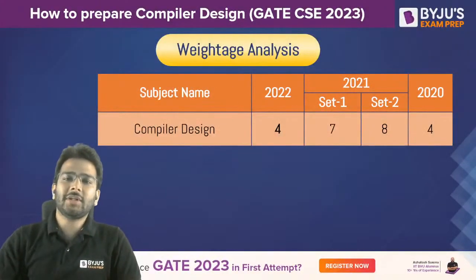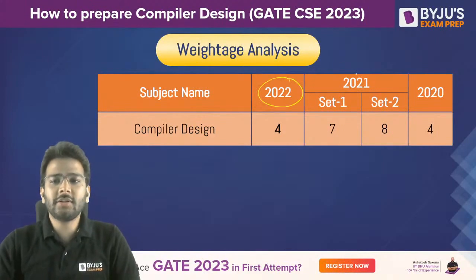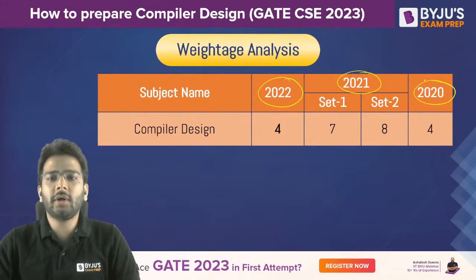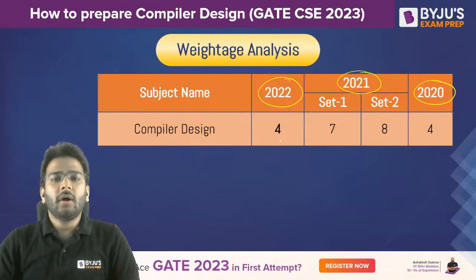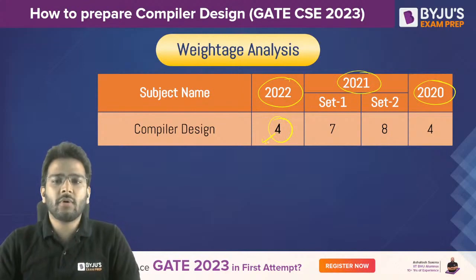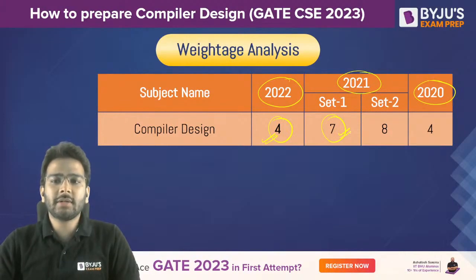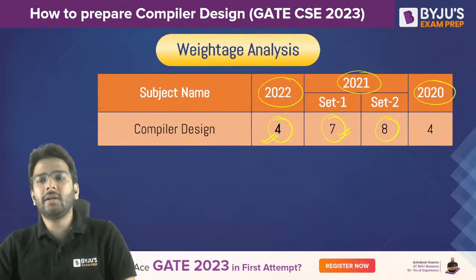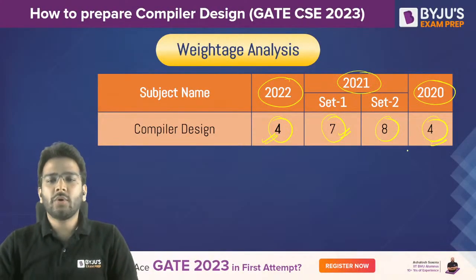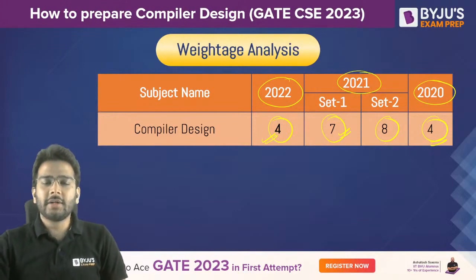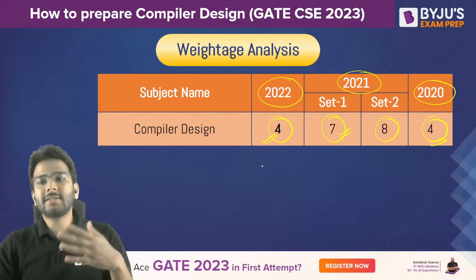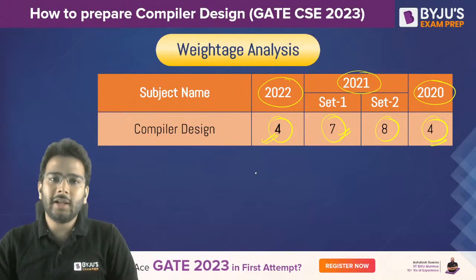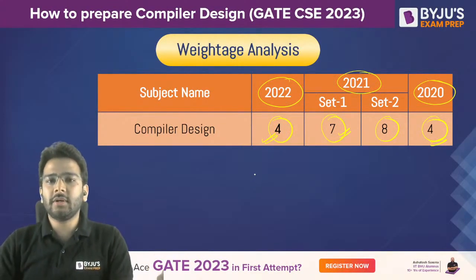If we talk about the weightage analysis, for the last three years — 2022, 2021, and 2020 — on average it is going to be four to eight marks. In 2022 they asked questions for around four marks, but in 2021 for set one it was around seven marks, for set two it was eight marks. For 2020 and even for 2019, it was four marks only. On average you can say it is around five marks for compiler, but sometimes it may vary — it may go till eight. So you cannot neglect this subject.